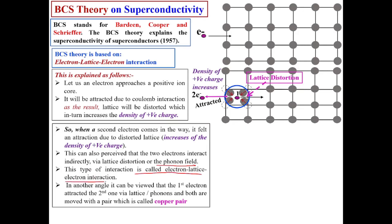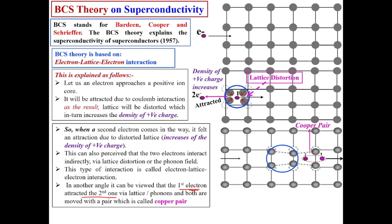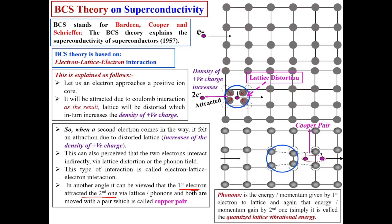This type of interaction is called electron-lattice-electron interaction. From another angle, the first electron attracts the second one via lattice or phonons, and both move as a pair called a Cooper pair. You can see in the animation: when the first electron moves through the lattice, it distorts the core; that distorted core then attracts the second electron, so the first electron indirectly attracts the second, and they move together as a pair.